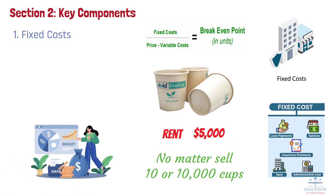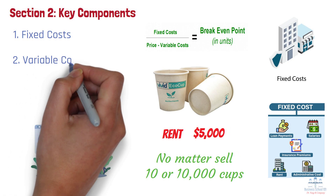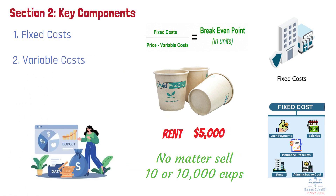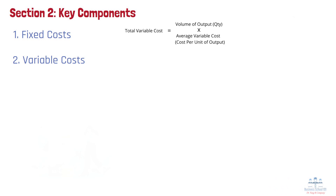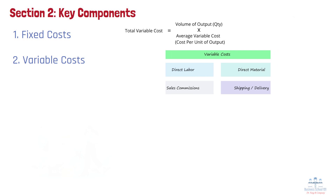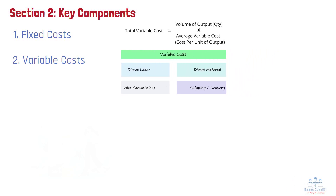Number 2: Variable costs. Variable costs fluctuate directly with the level of production or sales. These costs increase as more units are produced and decrease when fewer units are made. Examples of variable costs include raw materials, packaging, shipping, and manufacturing labor.